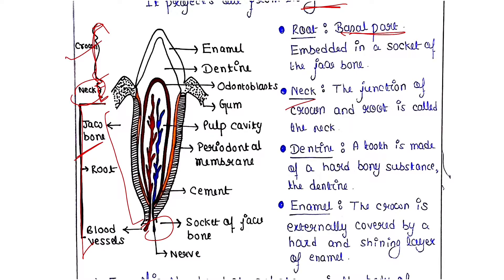The tooth is made of a hard, bony structure called dentine. This part here is the dentine — it is a hard and bony substance that forms the main bulk of the tooth.